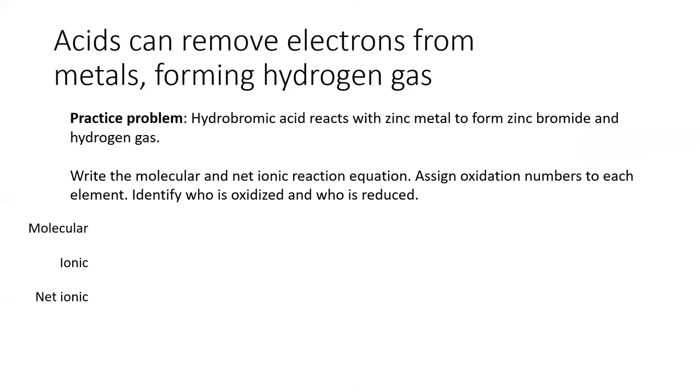Okay, back to the real world. You've probably seen acids eating through metals in movies. Well, this is partially based on real life. Acids will steal an electron from metals to dissolve the metal. Try writing the net ionic equation for the reaction described here. Assign oxidation numbers and identify who is oxidized and who is reduced. Pause the video now and try it out.